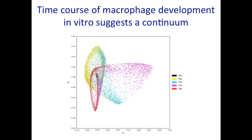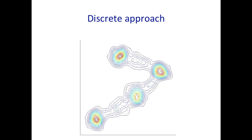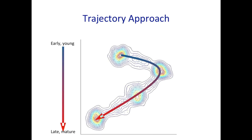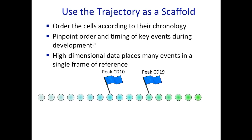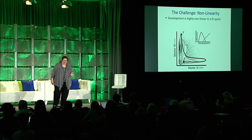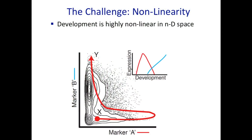Beyond putting things into bins — we actually have a continuum of cell types. This is macrophages growing in a dish, and you see this smear over time. Bins is the wrong approach: the discrete method finds these dominant cell types, these hills, but throws out 60% of the cells. So we want a trajectory-based approach to order the cells according to their chronology. If we look at it high-dimensionally, we can order them and pinpoint key events when they proliferate and when important things happen. The computational challenge is incredible, complex non-linearity.